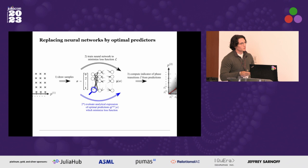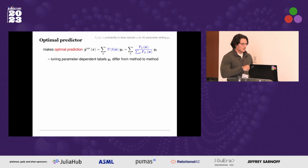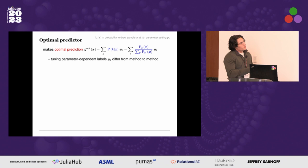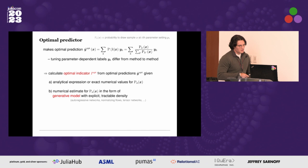The optimal prediction for a given sample X is constructed by weighting each tuning-parameter-dependent label Y_k — where k indexes the set of sampled values in our tuning parameter space — by the corresponding conditional probability. This conditional probability is constructed from the probability distributions P_k underlying the measurements across our parameter space. Once we have obtained these optimal predictions, we can compute an optimal indicator of phase transitions by processing them in the same fashion as for neural network-based ones. The computation of these optimal predictions really boils down to knowing the probability distributions P_k(x) underlying the measurements.